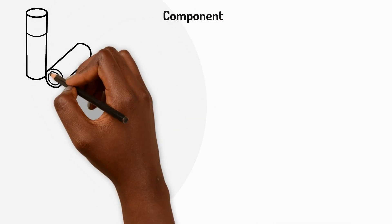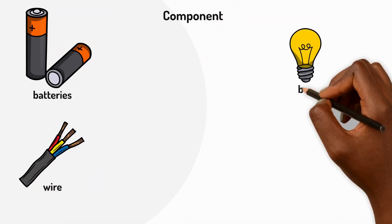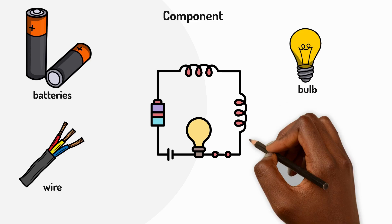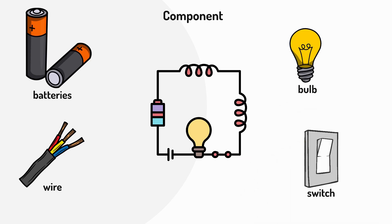The different parts of a circuit are called components. Batteries, wires, bulbs and switches are all components. Each one has a special job to do.